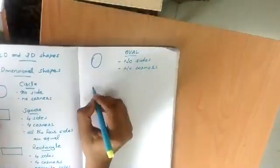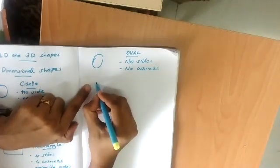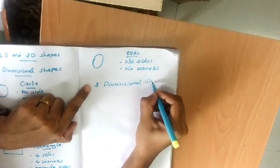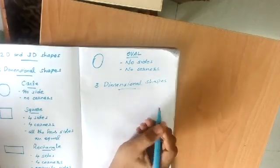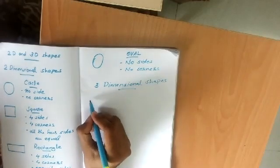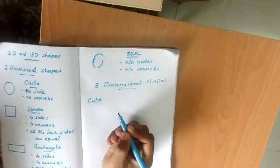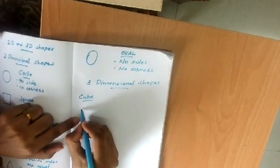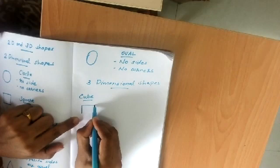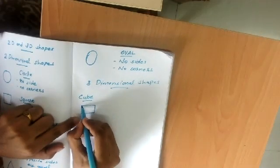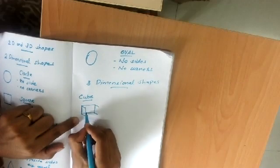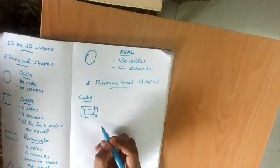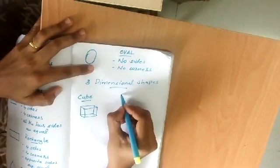Now we will look at three-dimensional shapes and their properties. The first 3D shape is the cube. We can draw a cube by drawing lines and joining them together to get a cube.